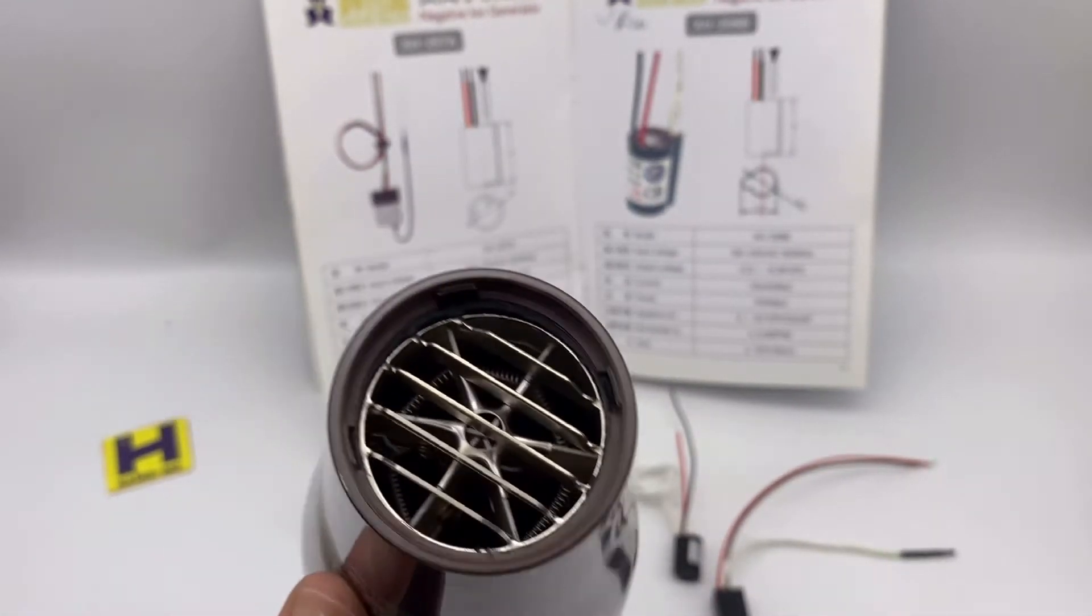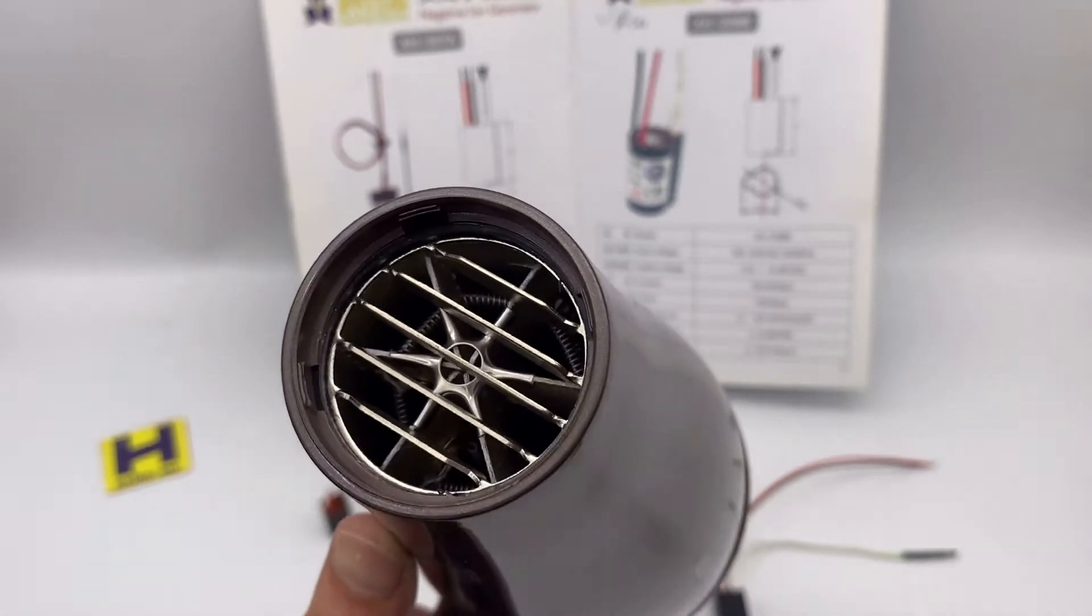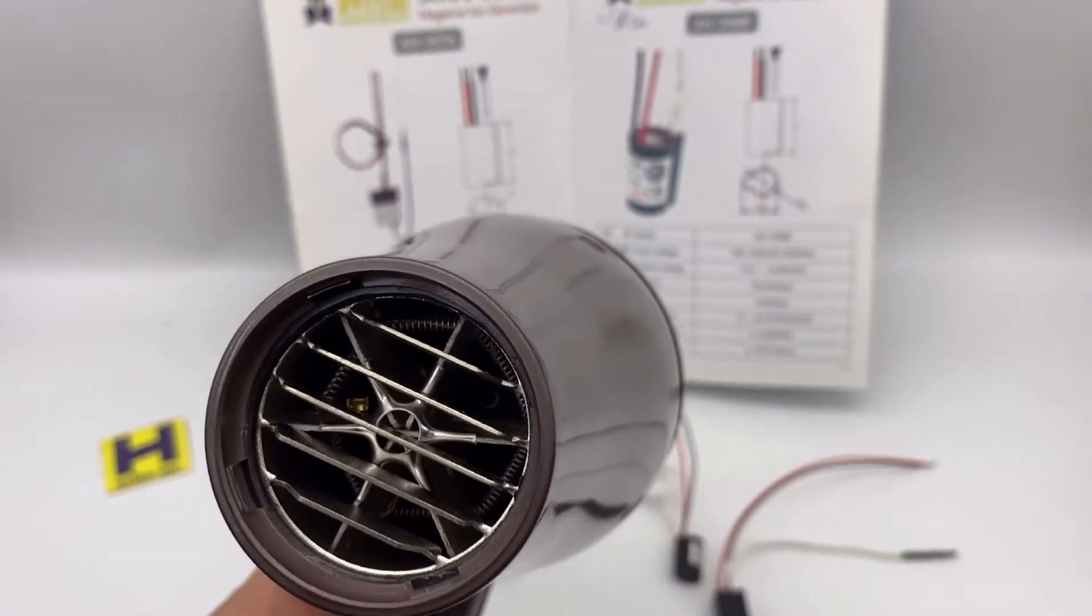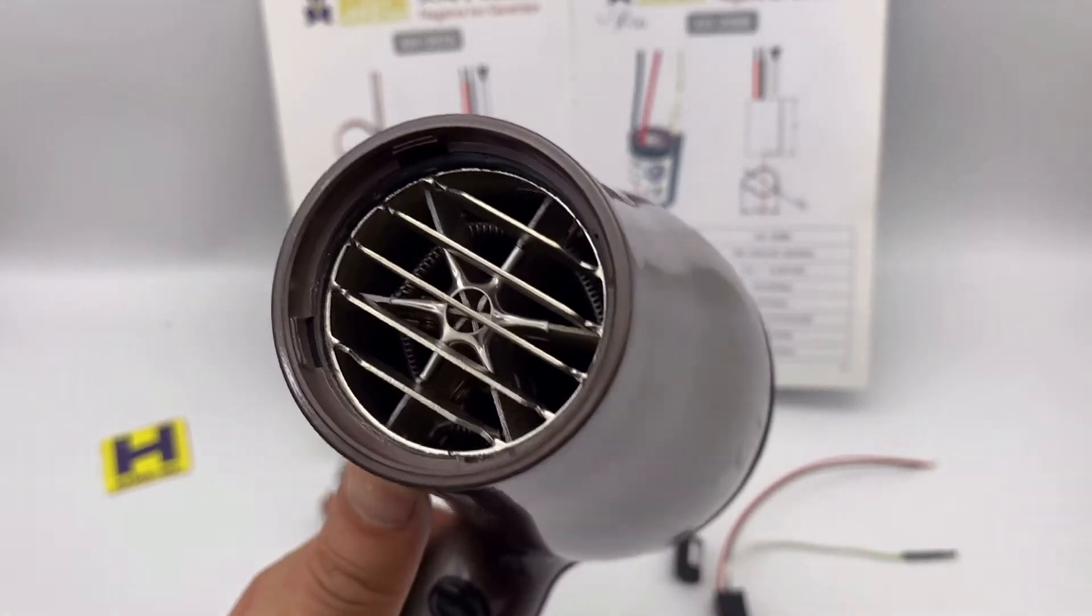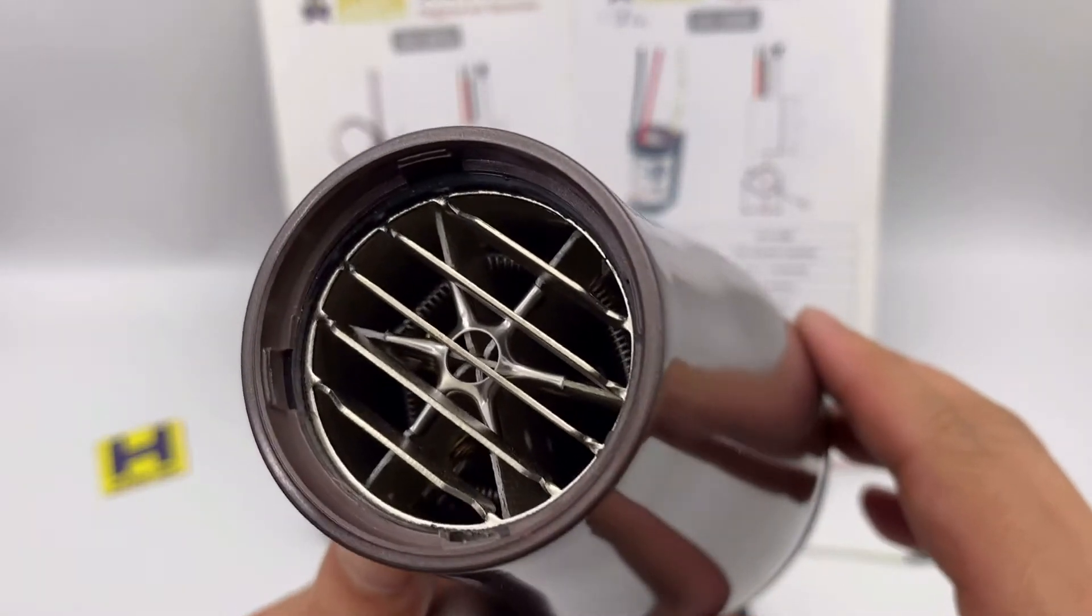So some vendors, it have ironing function, it have ironing function so you can see inside. There is a brush inside.